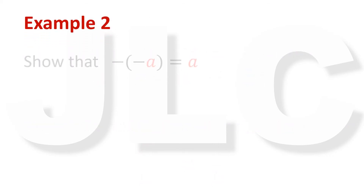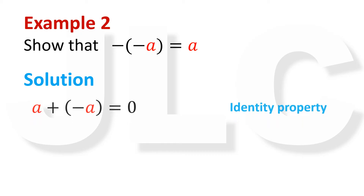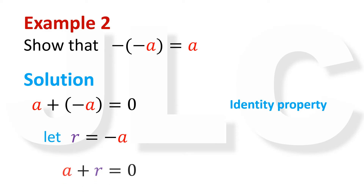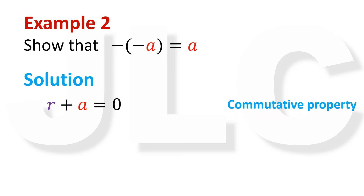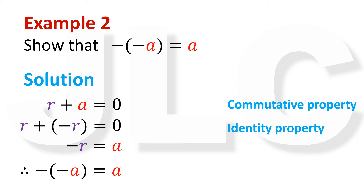Example 2: Show that negative of negative A equals A. We start with the identity property for addition: A plus negative A equals 0. Now if we let R equal negative A, then A plus R equals 0. By commutative property, R plus A equals 0. But the identity property in terms of R gives R plus negative R equals 0. From these two equations, negative R equals A. Since R is negative A, therefore negative of negative A equals A.